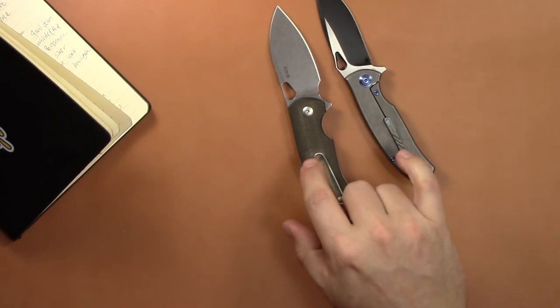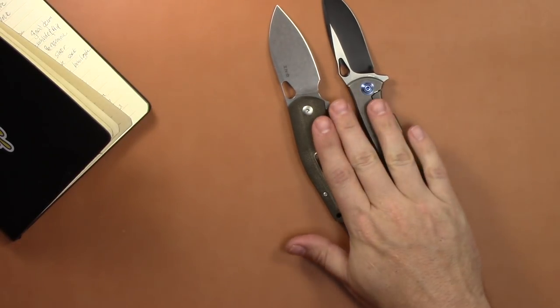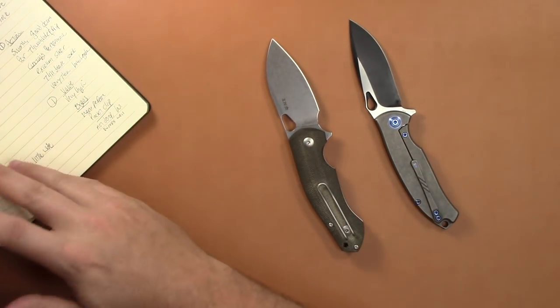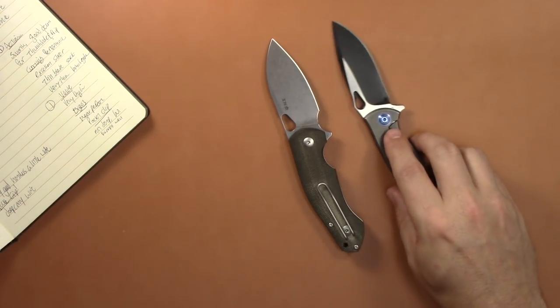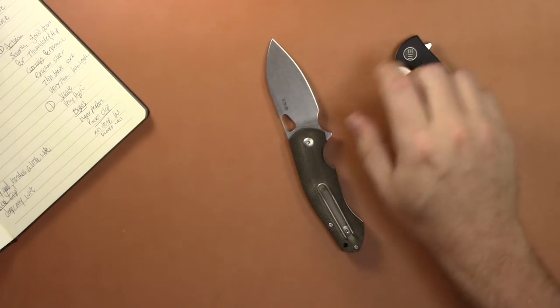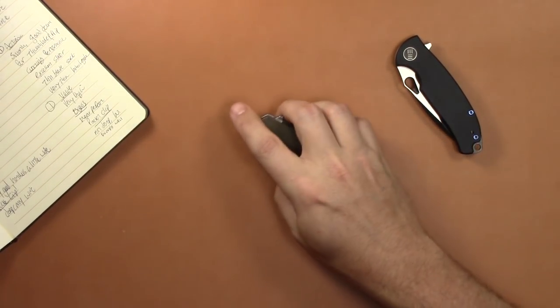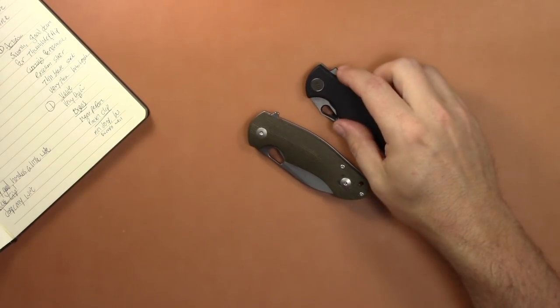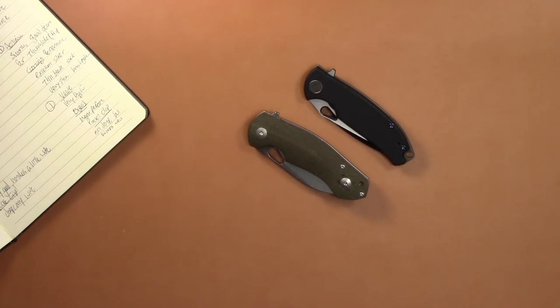Edge retention is obviously going to be better on the Biblio with M390, but we kind of knew that when going into that, that it's going to have a little better steel. But as far as cutting performance, I've got to give the edge to the Wii, and just in my personal use as well, the Wii is just ridiculous how well it cuts, it just slices things like crazy. So definitely getting the edge there.